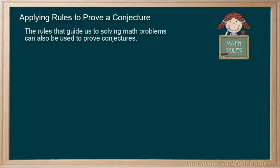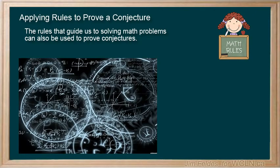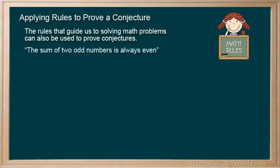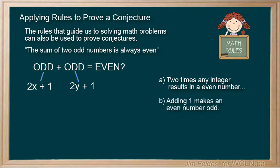The rules we have created for math can also be applied to prove conjectures. Sometimes the proofs become some of mathematicians' greatest challenges, or they can be quite simple. We have seen a pattern that has led us to the conjecture that the sum of two odd integers is always even. We can write the odd numbers as 2x plus 1 and 2y plus 1 because we can make the following two statements: Two times any integer gives us an even number, and adding 1 makes an even number odd.